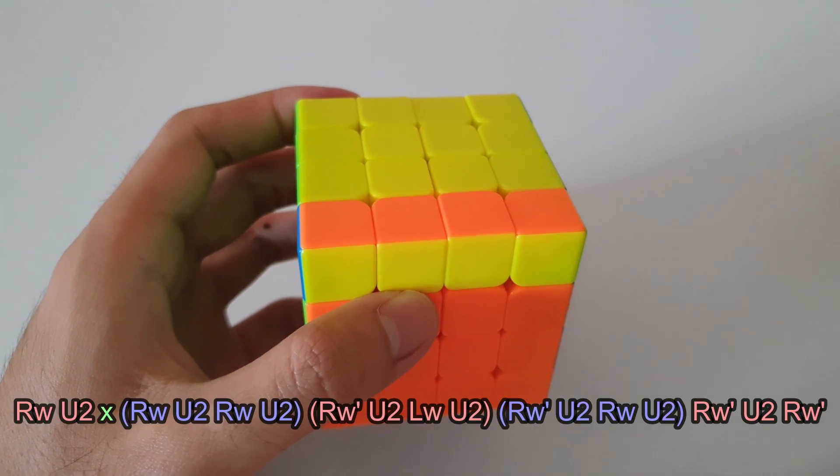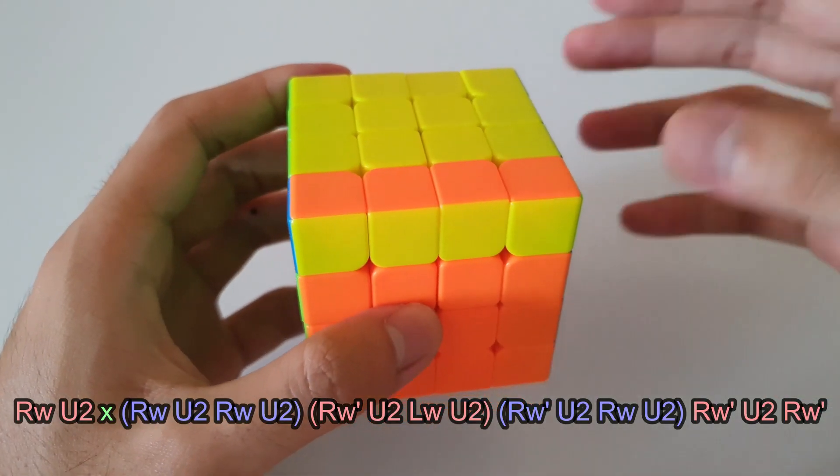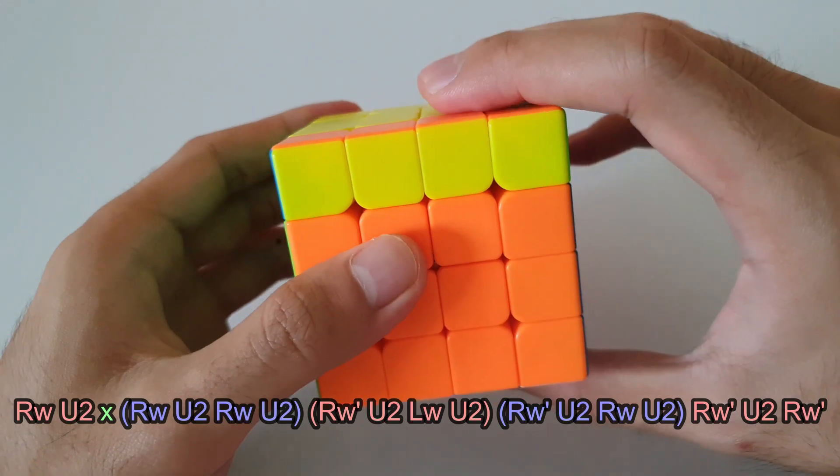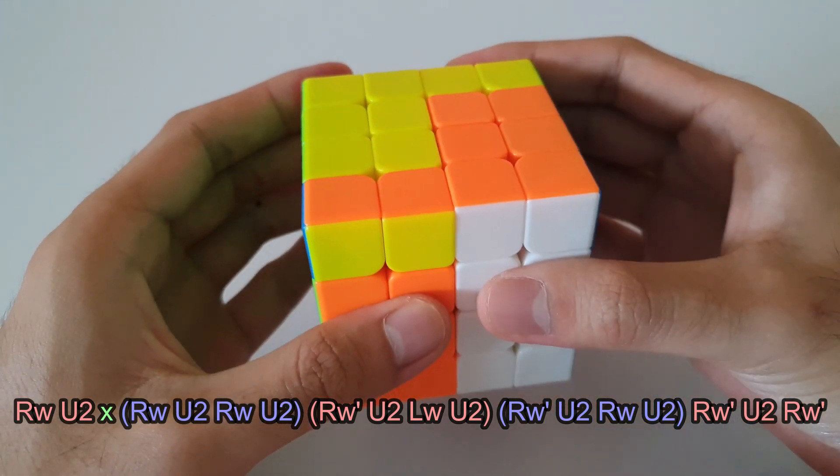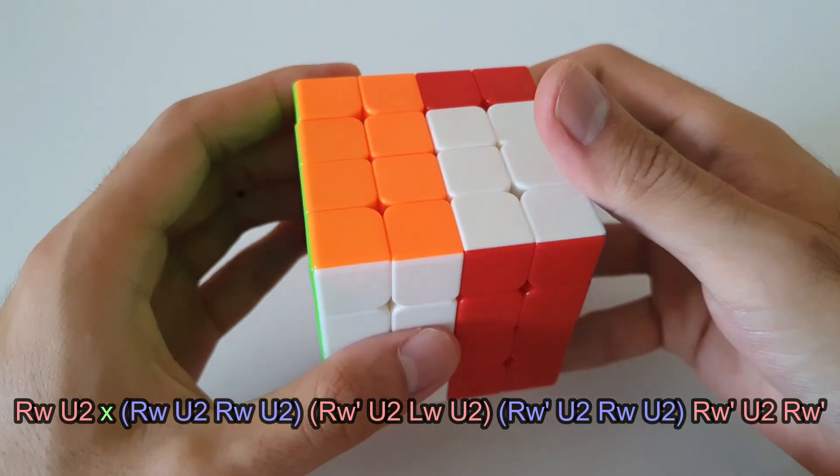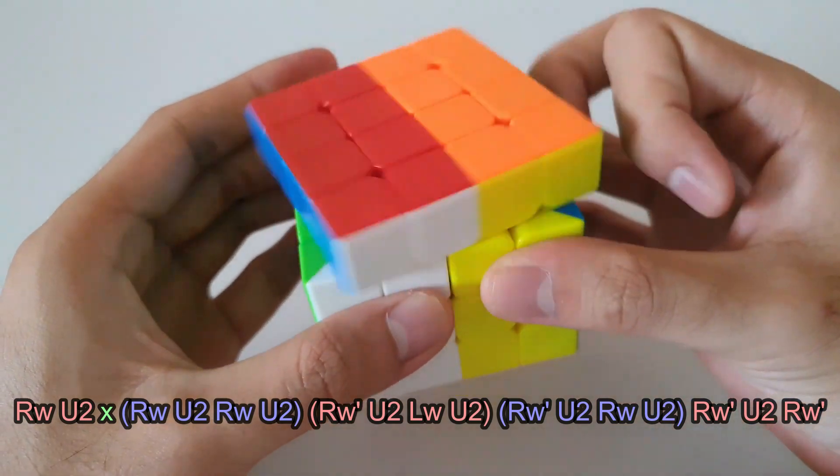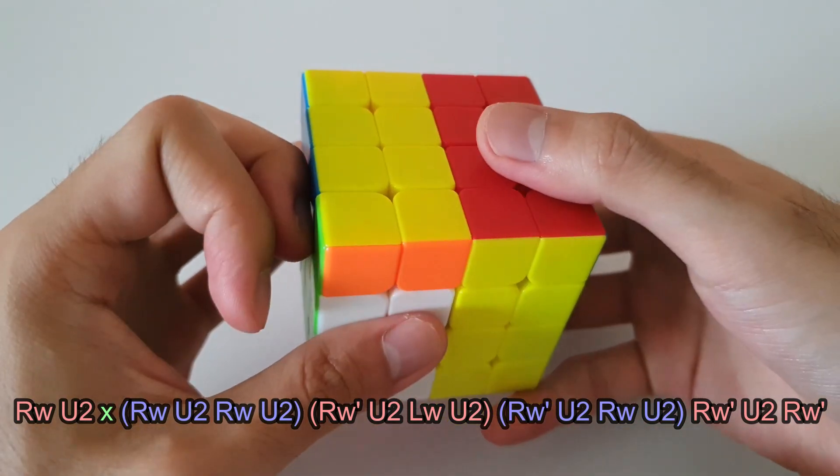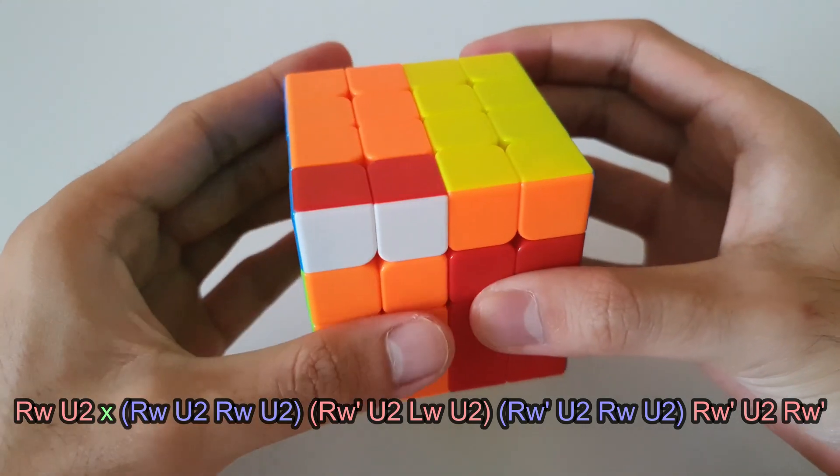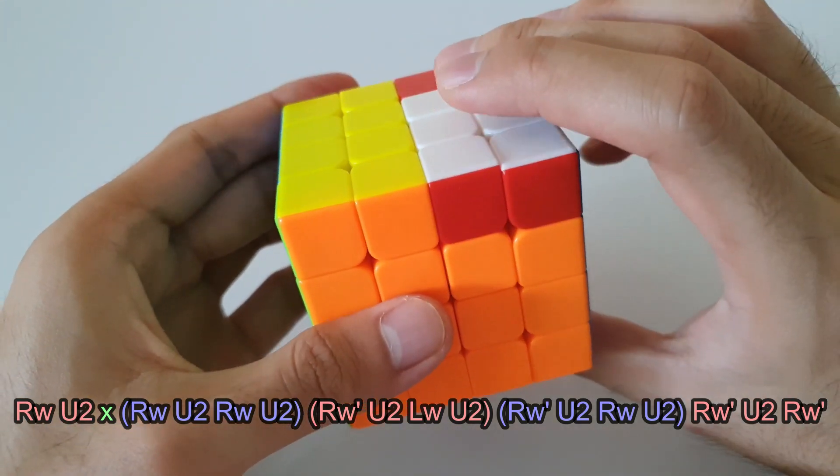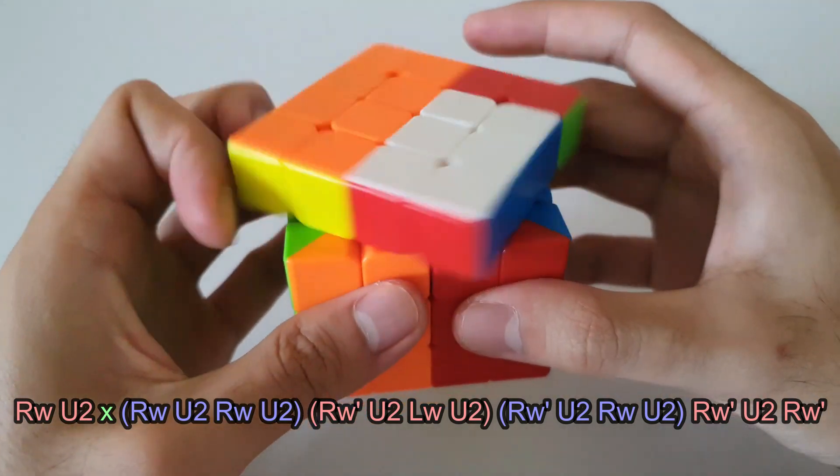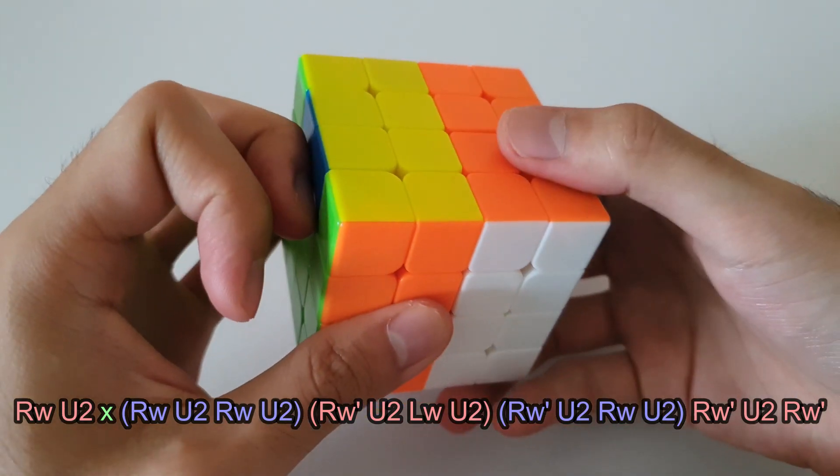So going over that algorithm again just to make sure you guys have definitely got it. So it starts off with a bit of a re-grip, right side up, rotate down, right side up, right side up, right side down, left side down, right side down, right side up, right side down, right side down.